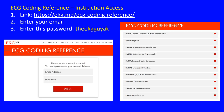I want to point you to our ECG coding reference where I'm getting this information — you have free access to it. To get access, go to ekg.md/ecg-coding-reference. That link will take you to a page where you enter your email and use the password I'm providing: 'the ekg guy aka'. Enter your email, use that password, and you'll receive a confirmation email — click that link to activate your free access.